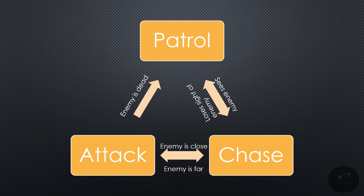They walk around a corner and the enemy is right there. They enter a chase state to begin with and then jump to the attack — we lose a bit of flexibility there. So, we could actually connect patrol directly down to attack. We could have it go both directions.